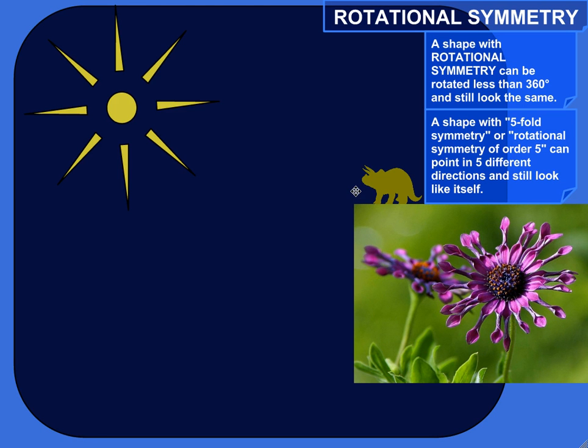So what is rotational symmetry? A shape with rotational symmetry can be rotated less than 360 degrees and still look the same. And I say less than 360 degrees because actually any object could be rotated 360 degrees. That's just a full circle. It still looks like it looked before. So that doesn't really count.